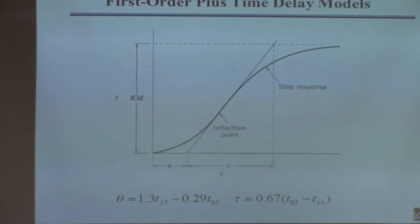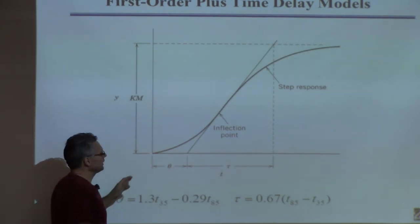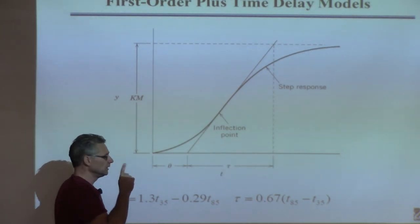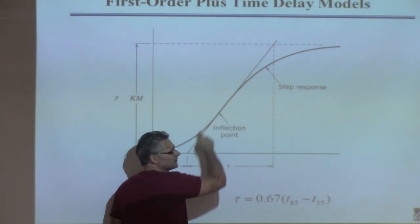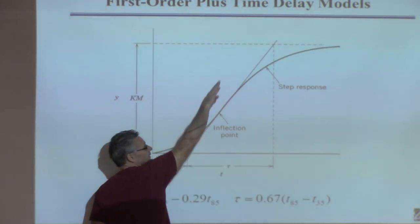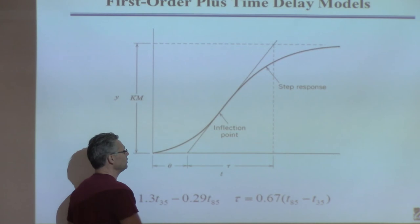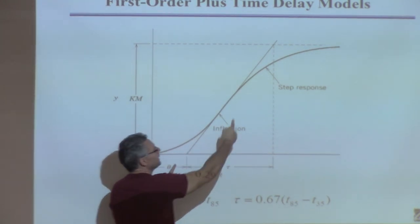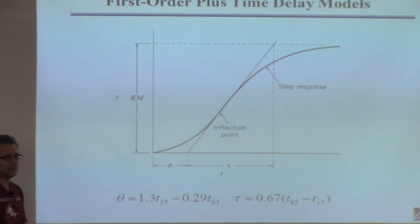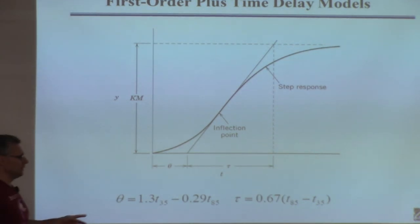This is even more of a bad idea. What they're saying is you can find both theta and time constant directly from the response curve if you can find where this response has an inflection point and draw a tangent line to it. Where this crosses the axis is theta, and this distance is tau. The problem is in real data sets, you can't find an inflection point, much less draw a tangent line to it, unless the data is super clean. So the previous method is much better.